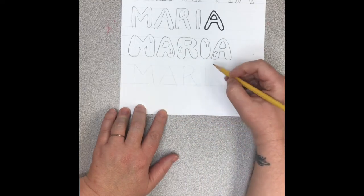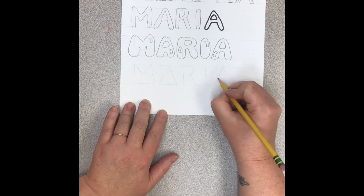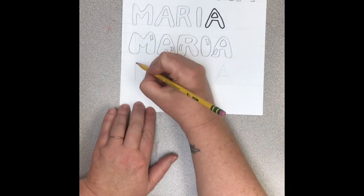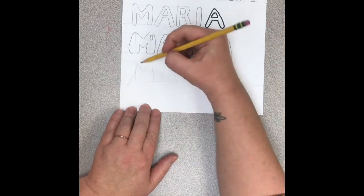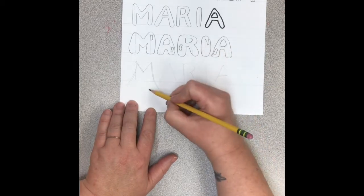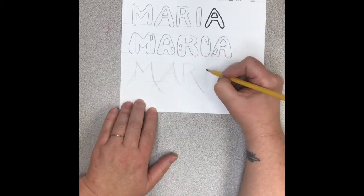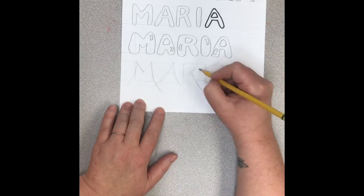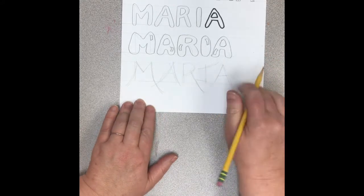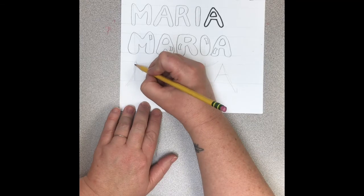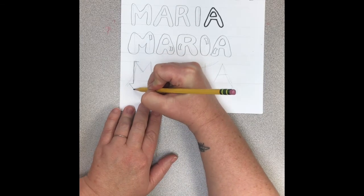And then for my last try I'm going to work on graffiti style letters. Graffiti style letters have a lot to do with how the letters relate or interact with each other. I'm just making curves. I'm making my letters longer and bigger and I'm blocking it out and then I'm going to start to go around it.